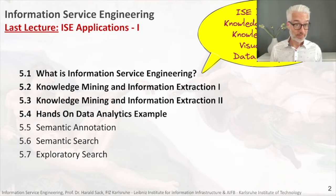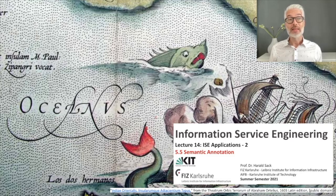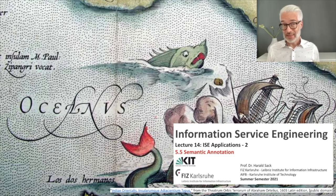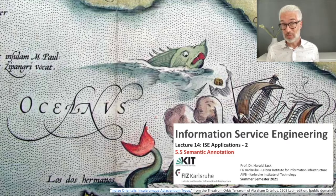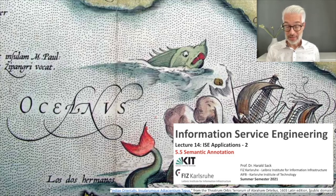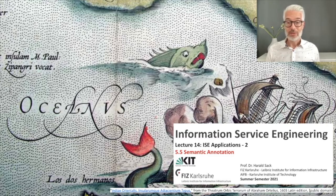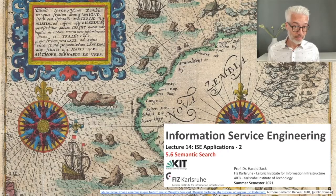Now we come to further applications, which will be related to search — web search. You remember this was our very first question: how to get information from the web via web search engines. To make use of semantic technologies within these huge information systems, we have to create semantic annotations. Semantics has to be made explicit — either the authors annotate their documents with semantic metadata, or the search engine performs some kind of semantic analysis on these documents to produce a semantic representation.